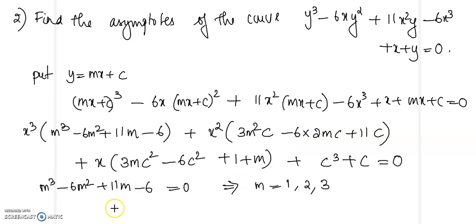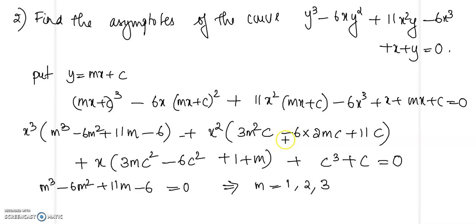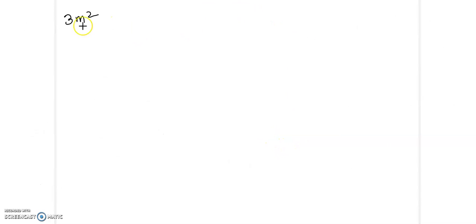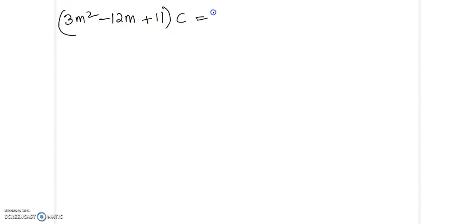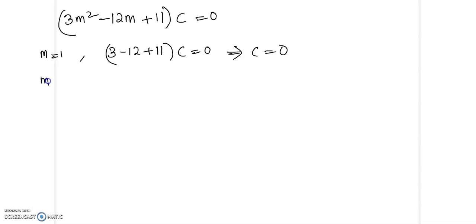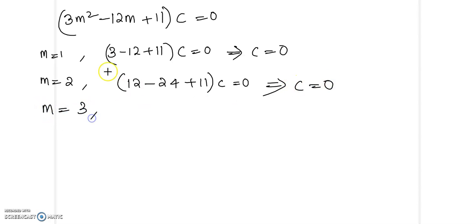The second highest degree term gives 3m squared minus 12m plus 11 times c equal to 0, where 3 is common in every term. When m is 1, the coefficient 3 minus 12 plus 11 is non-zero — wait, that equals 2, non-zero. When m is 2, we get 12 minus 24 plus 11, which is non-zero. When m is 3, we get 27 minus 36 plus 11, which equals 2, again non-zero. So c equals 0 for all three values.